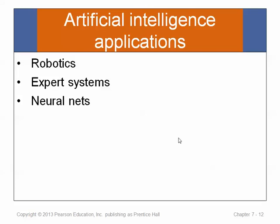Neural nets are an interesting idea. You can take massive sets of data and try to actually have software learn. The financial industry and fraud detection is an area where they try to look for patterns and try to identify what patterns are associated with fraud.